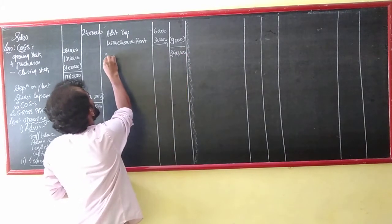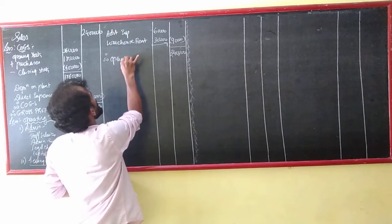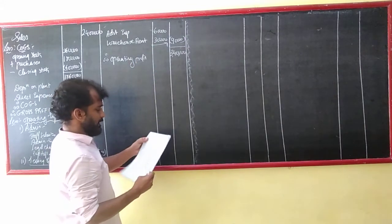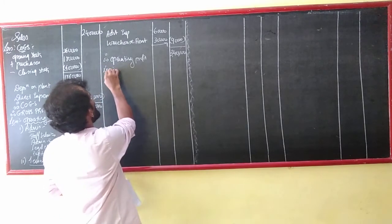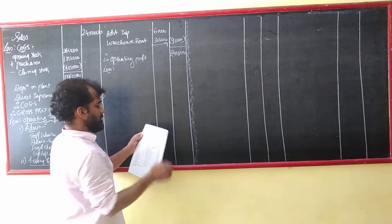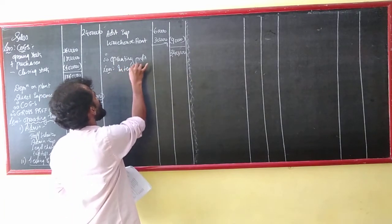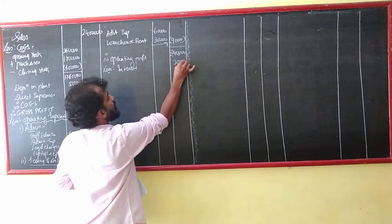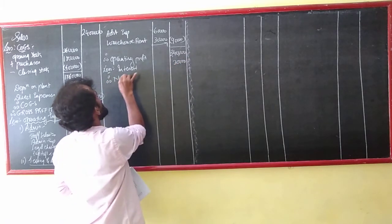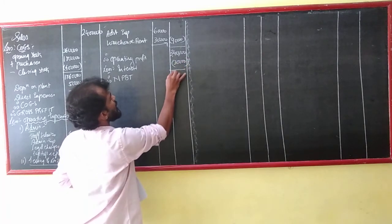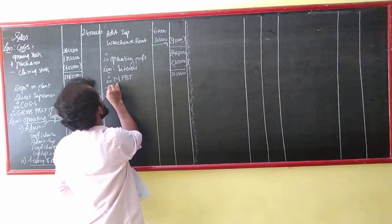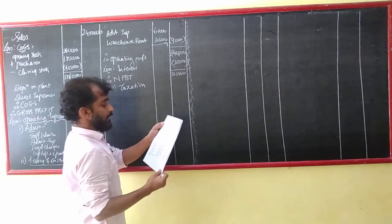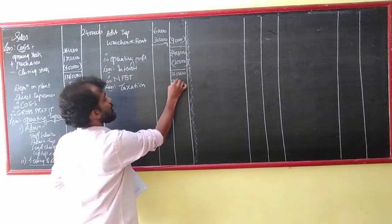Therefore, operating profit — profit before interest and tax. Less non-operating items. So this is the interest — interest on overdraft, they have given 30,000. That means my NPBT is equal to how much? 3,10,000. Less provision for income tax. They have given an adjustment — provide provision: 2,40,000. So 2,40,000.